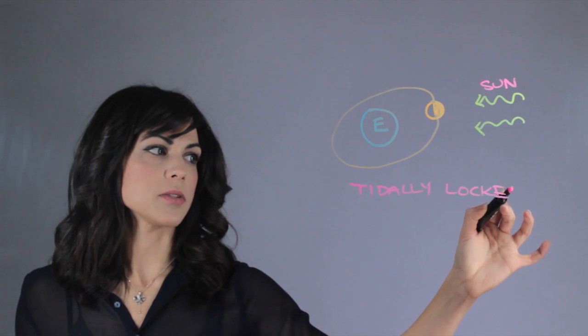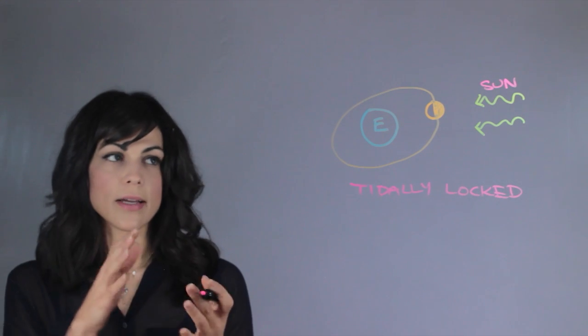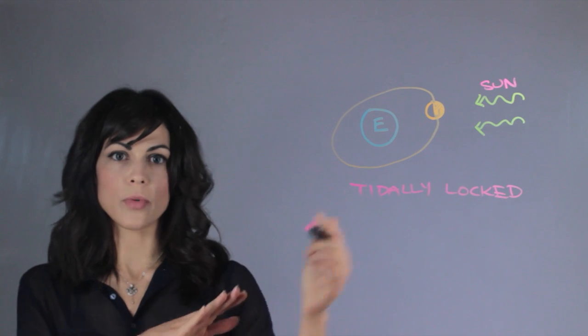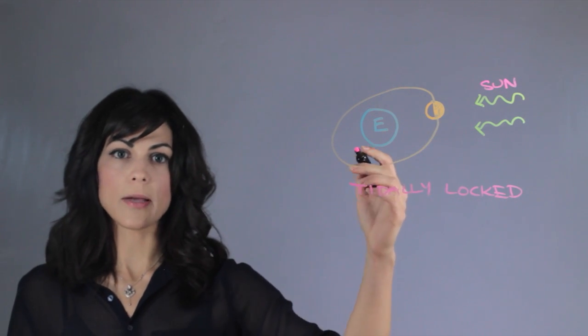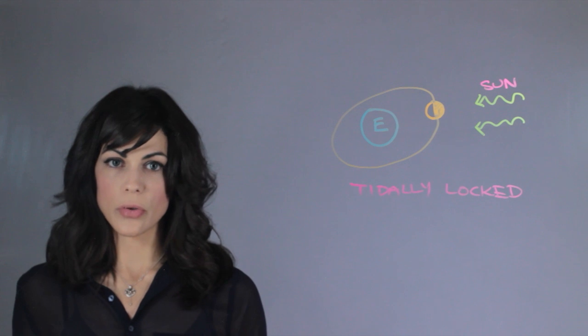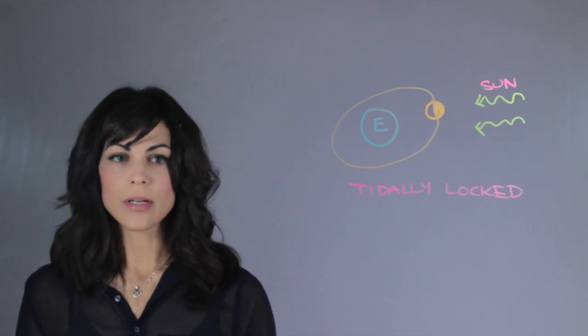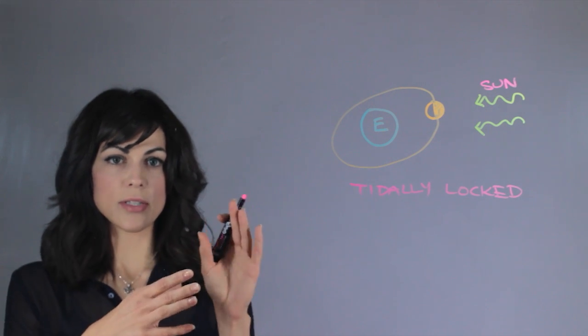So since we're tidally locked to the moon we always kind of see the same side. And what we need to realize is that it's not just 50%. It would be 50% if the moon's orbit was circular, but it's more than 50% because it's actually an ellipse, so you get to see a little even the other edges.